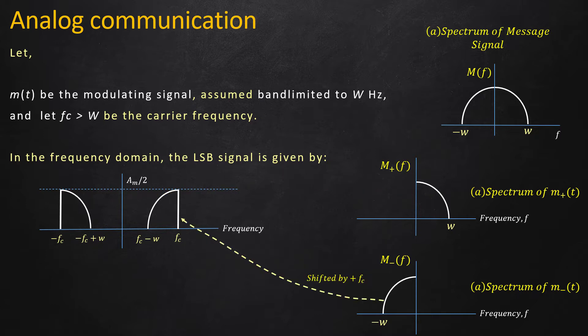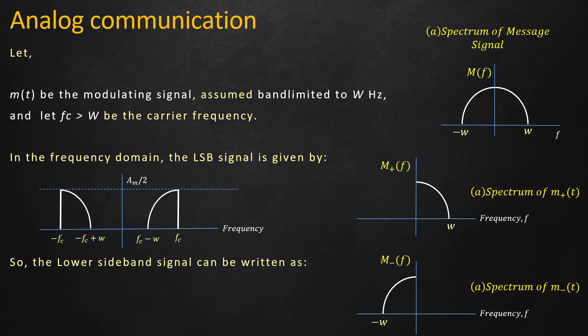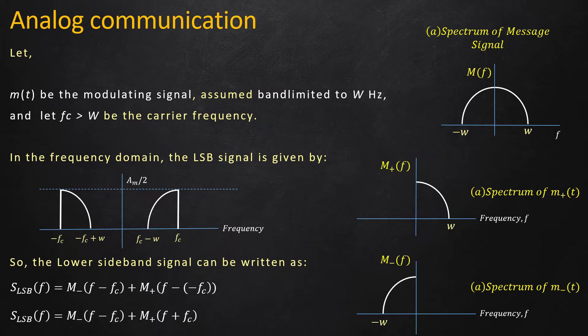So the lower sideband SSBSC modulated signal in the frequency domain can be written as M-(F - Fc) + M+(F - (-Fc)), which can be written as M-(F - Fc) + M+(F + Fc).